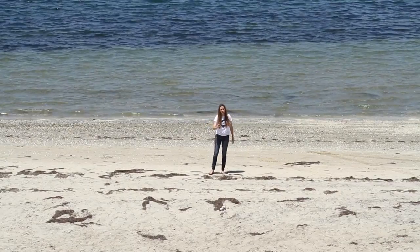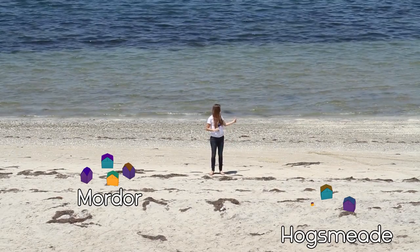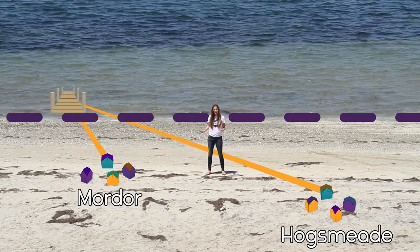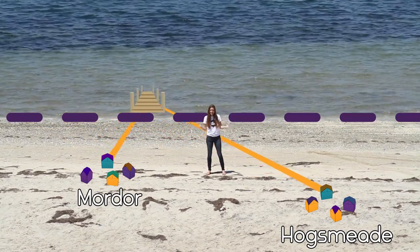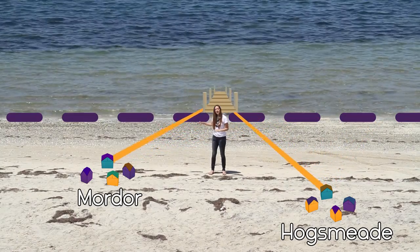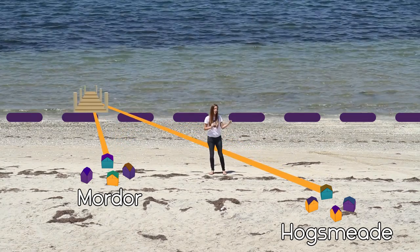Welcome to this brain teaser. So there are two towns — one we're going to call Mordor and one we're going to call Hogsmeade. We want to build a pier on the shore between the two towns, but the stingy city council wants to use as little material as possible. So how do we minimize the path from Mordor to the pier and on to Hogsmeade?